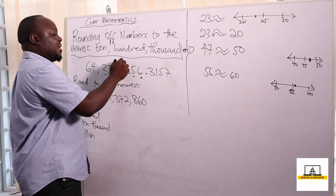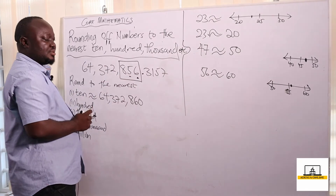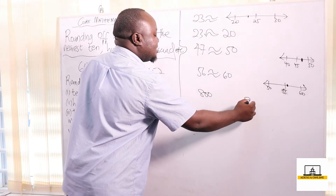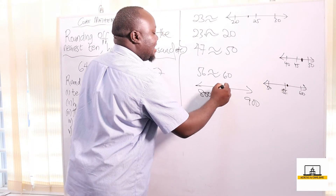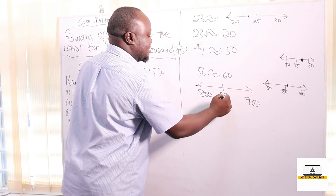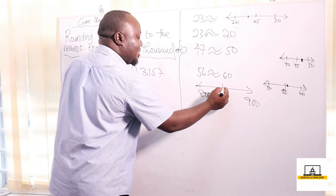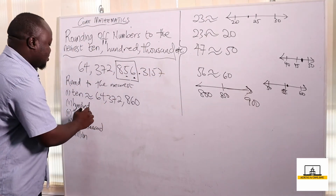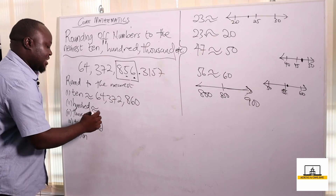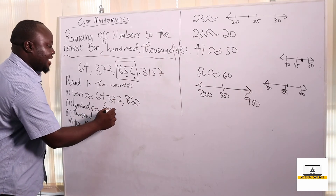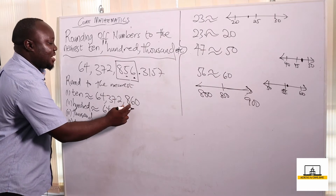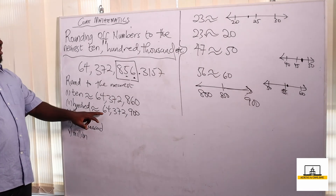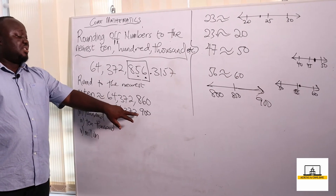Now, to the nearest hundred, we concentrate on eight hundred and fifty-six. Eight hundred and fifty-six is between eight hundred and nine hundred on the number line. The middle of eight hundred and nine hundred is eight hundred and fifty. Eight hundred and fifty-six is above eight fifty, which is closer to nine hundred. So to the nearest hundred, this becomes sixty-four million three hundred and seventy-two thousand nine hundred.